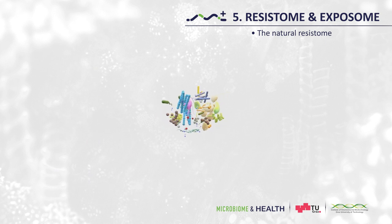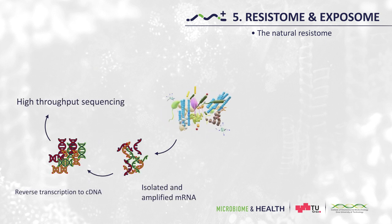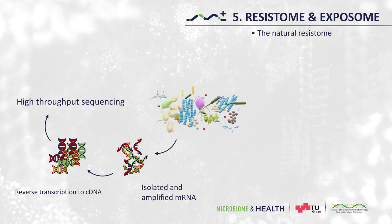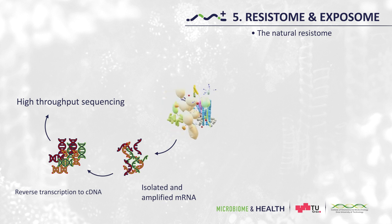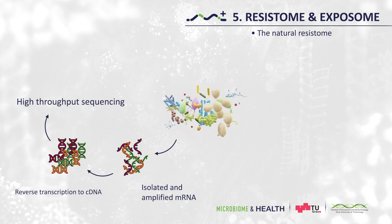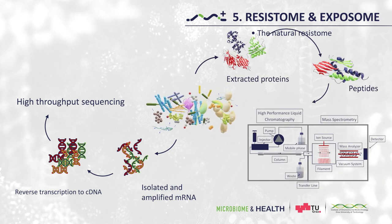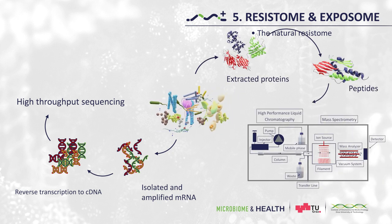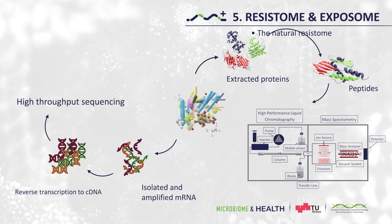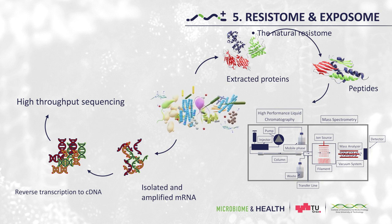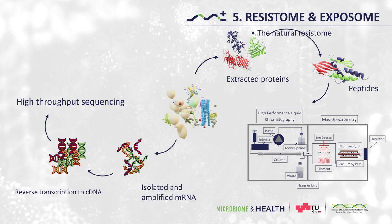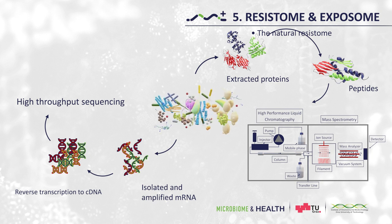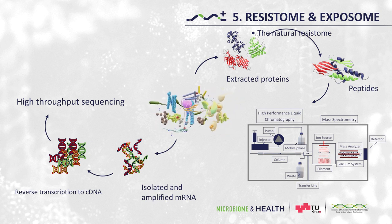Resistome analysis based on metatranscriptomics has a lower throughput compared to metagenomics and requires reference templates, but its implementation ensures that only expressed resistance determinants are assessed. Another possibility is to employ metaproteomics in order to study on the protein level. While this method can provide very precise insights into resistomes, it currently has the lowest throughput when compared with the aforementioned methods. Overall, as already highlighted in the methods chapter, a combination of different techniques and also the use of classical methods such as cultivation and quantitative PCR proves useful in most resistome studies.